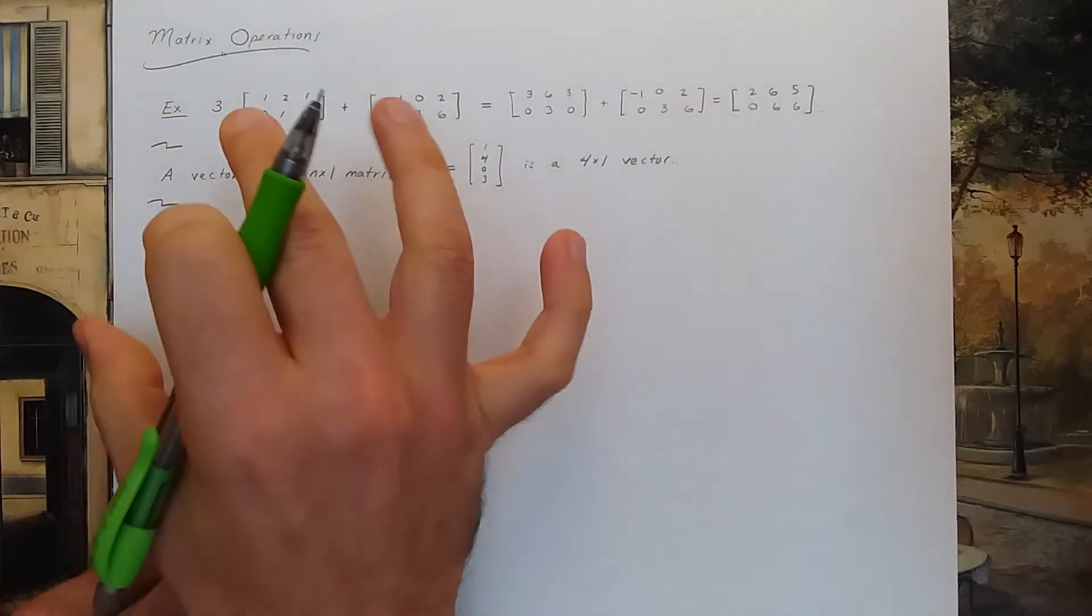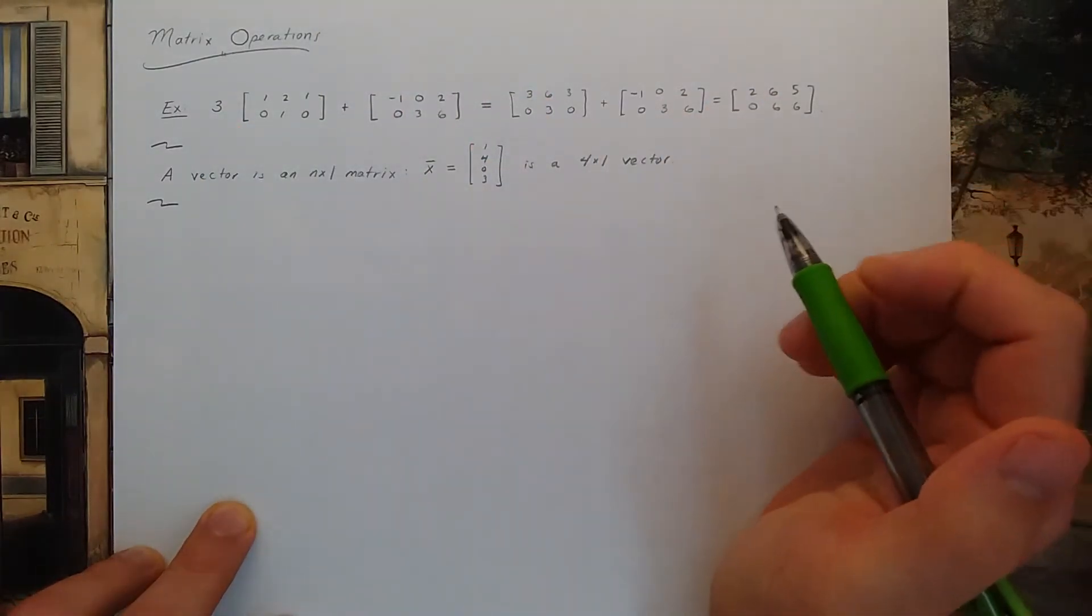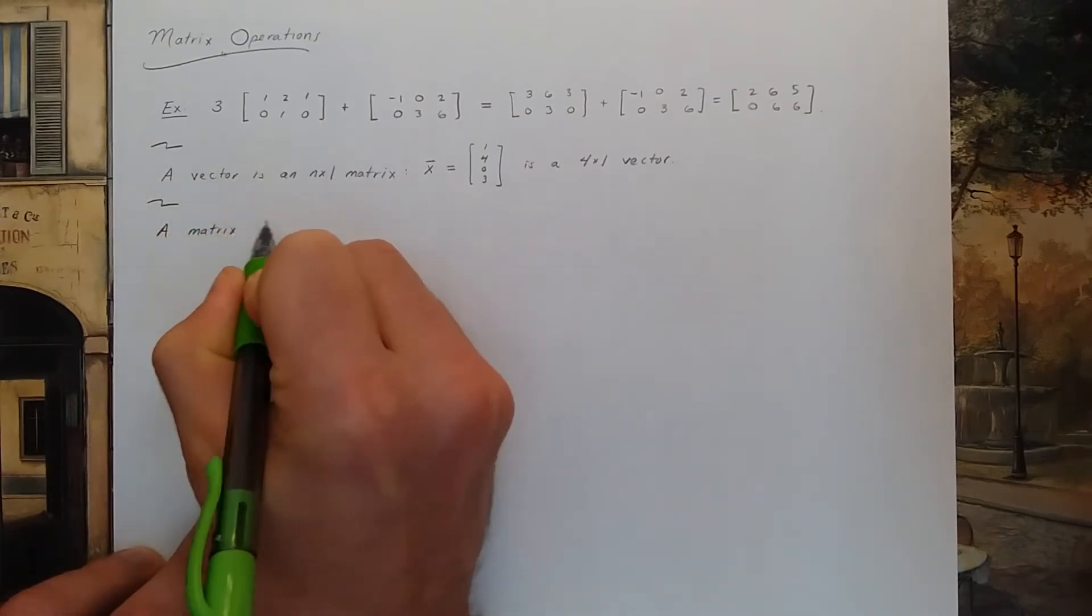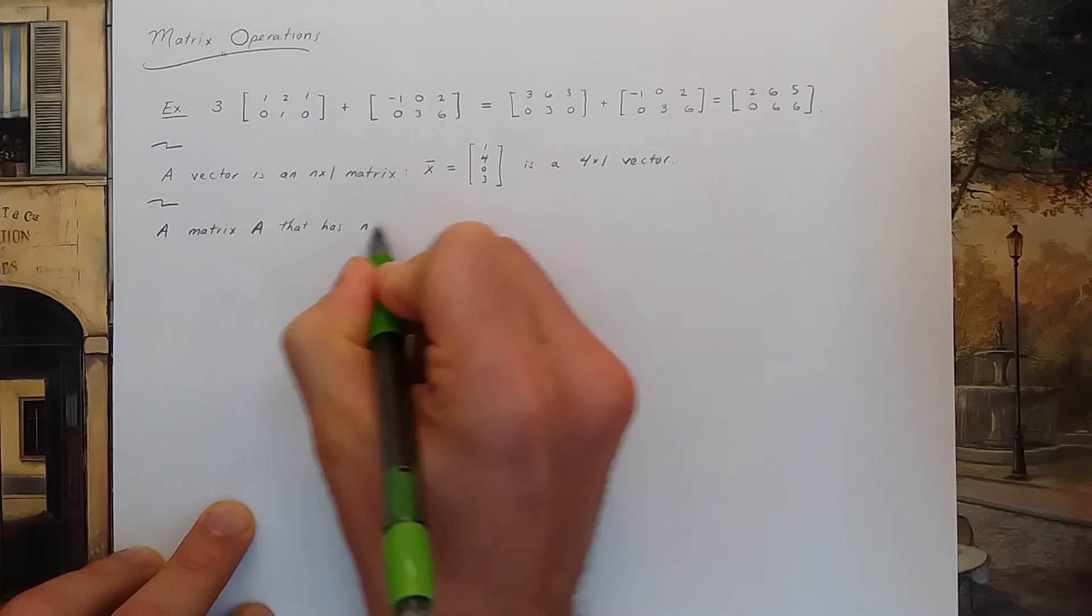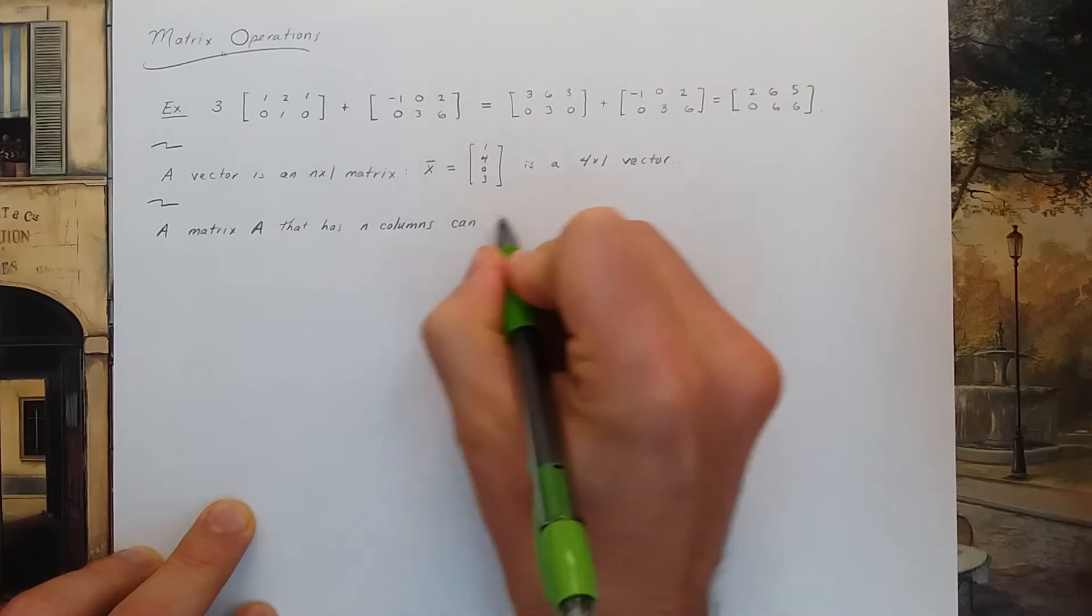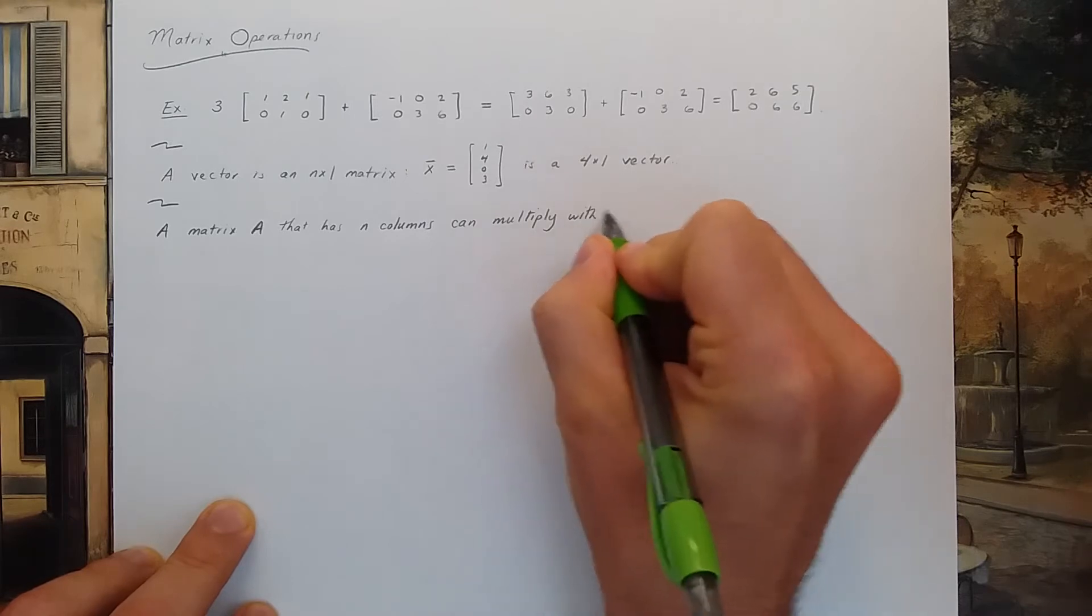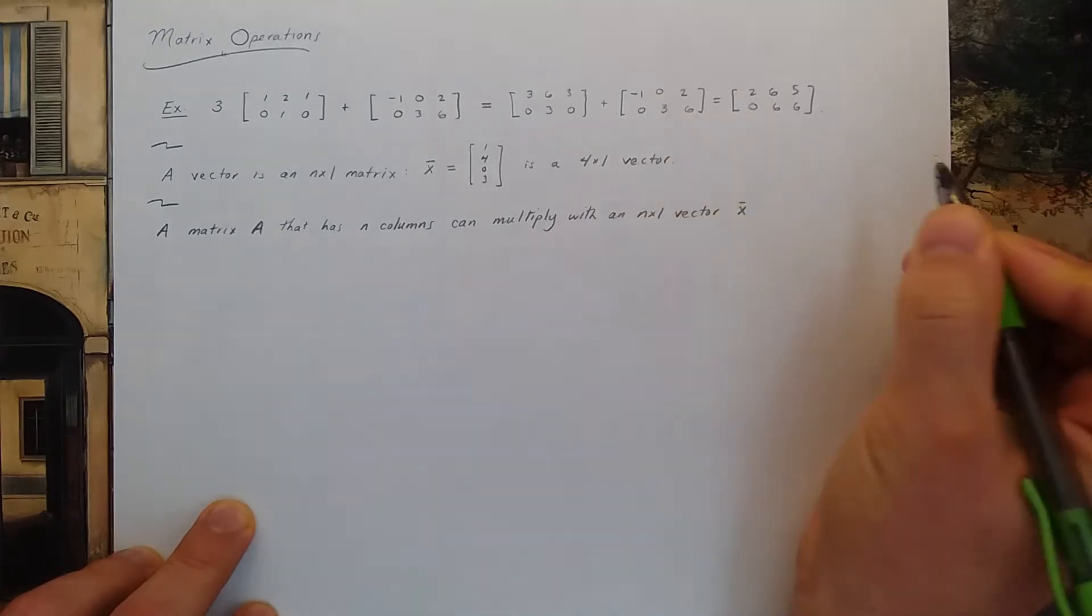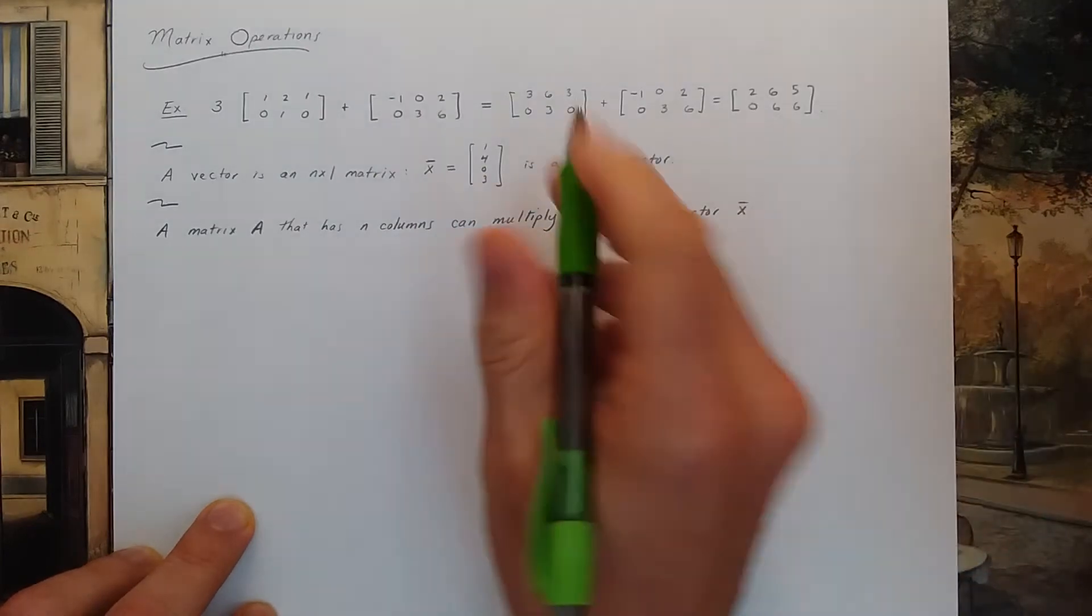You could take a matrix that has n columns and multiply it with an n by 1 vector. So let's see how to do that. A matrix A that has n columns can be multiplied with an n by 1 vector x. Usually when I have a vector I put a little line above it to denote that I actually have a vector.